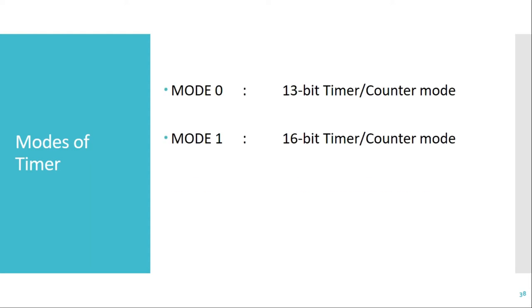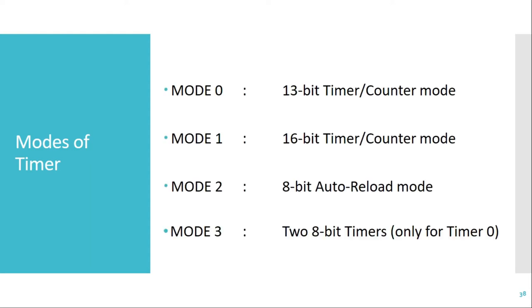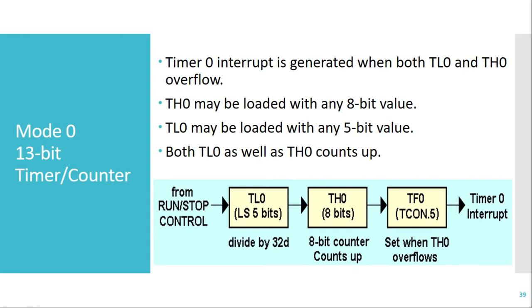In this video we'll see the modes of operation of timer. There are four modes of operation: mode 0, mode 1, mode 2, and mode 3. Mode 0 is a 13-bit timer counter mode, mode 1 is a 16-bit timer counter mode, mode 2 is 8-bit auto reload mode, and mode 3 is two 8-bit timers. Mode 3 is available only for timer 0; the first three modes are available for timer 1 as well.